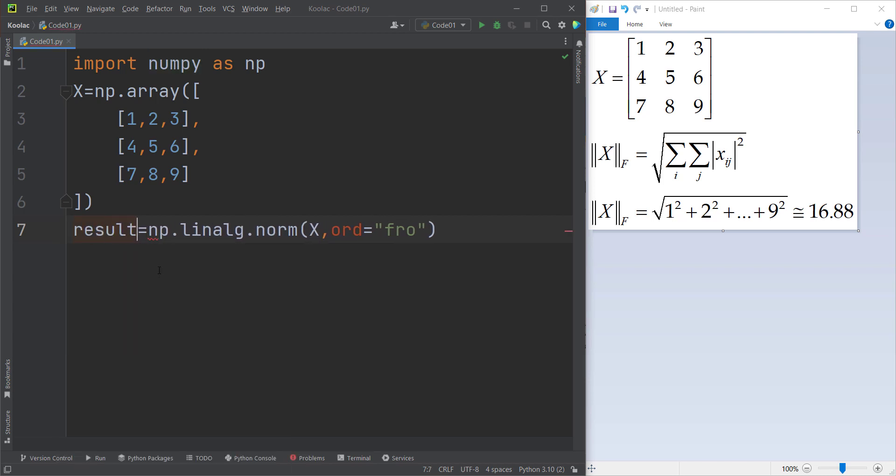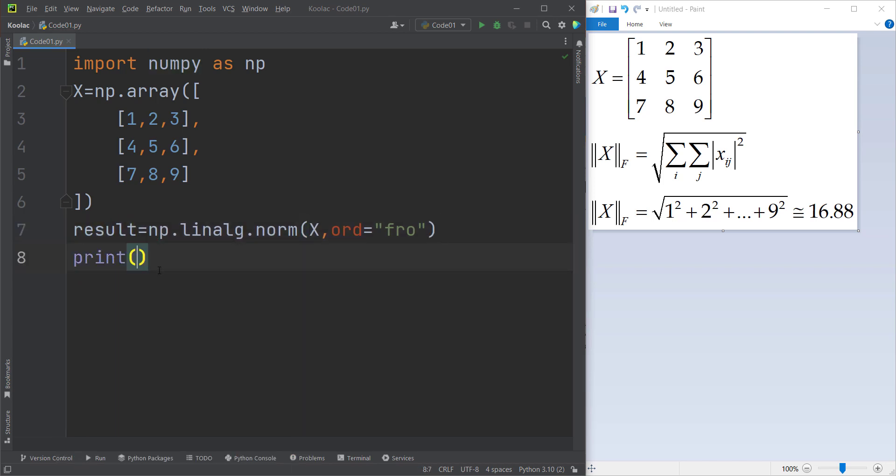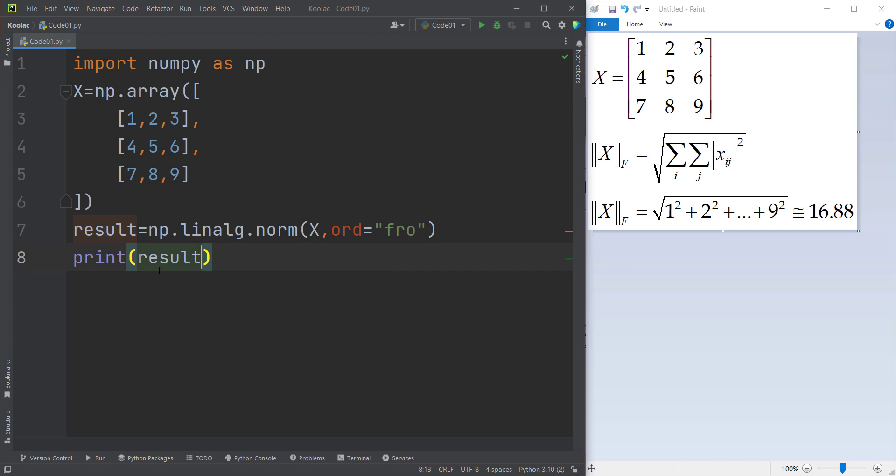That's it. And I want to store the results in a variable, let's say called result. And if I print the result variable, if I run the code, you can see here is the result, which is the Frobenius norm of matrix X.